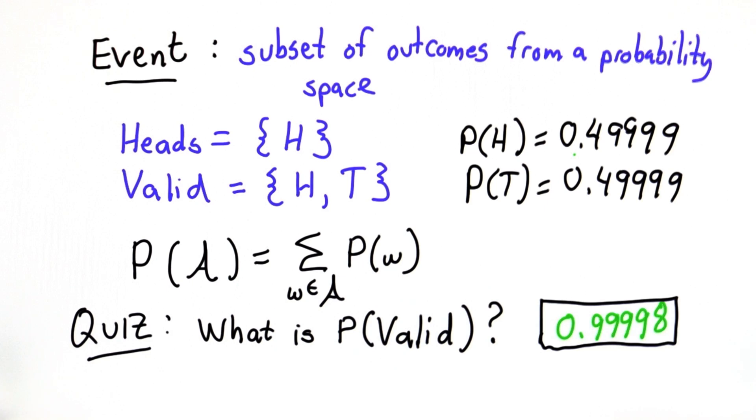The other way to solve it is to use the complementary event property, which makes the math a little easier in this case.